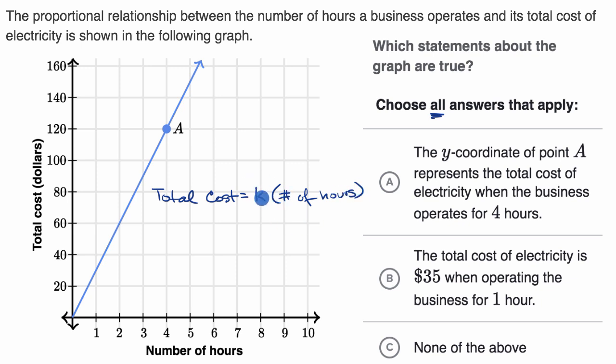We can even figure out what that constant of proportionality is going to be because they give us this point A. We know that when our hours are four, so when this is four right over here, our total cost is $120. So what times four is equal to 120? Well, we know that this K must be 30 because 30 times four is 120.